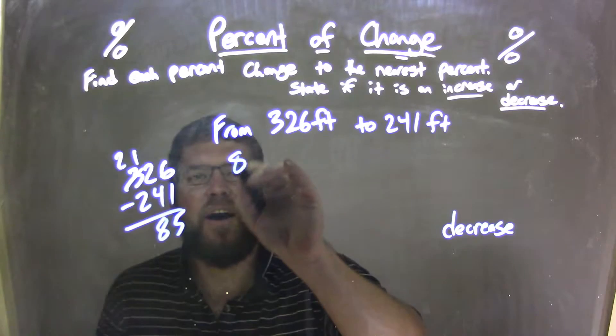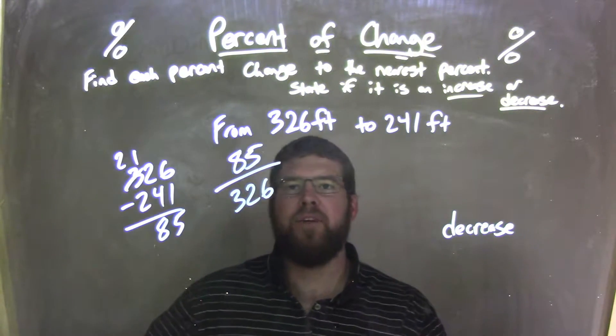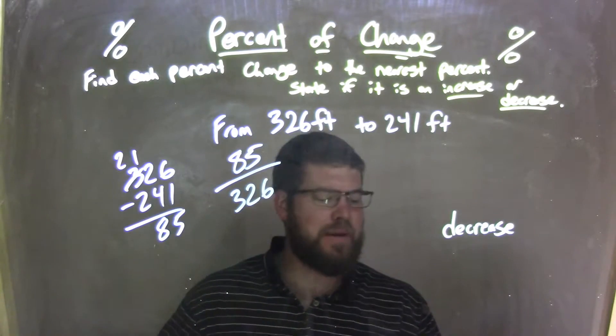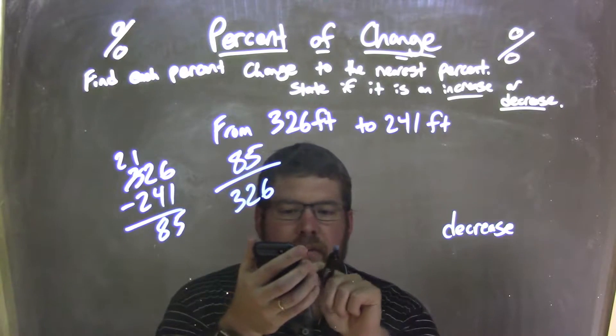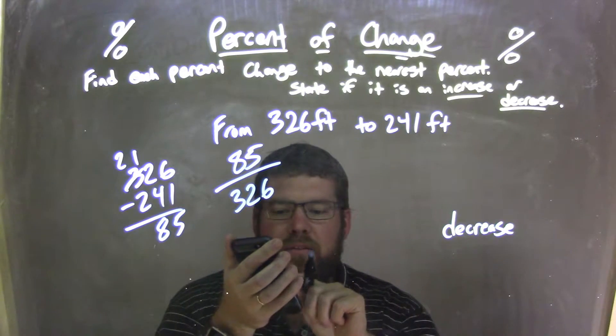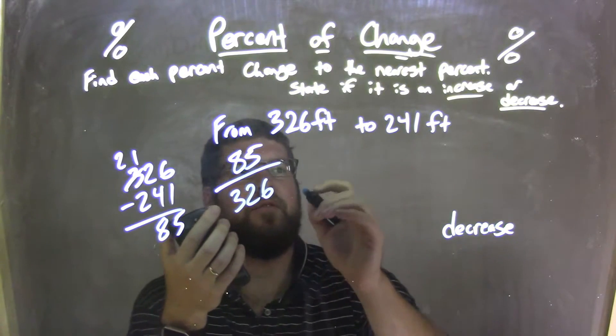I take the 85 and divide it by 326. So 85 divided by 326, I'm going to use my calculator here. I don't need to, but it makes it easier. I'm doing it here for speed reasons.